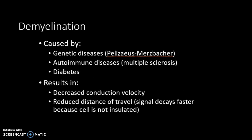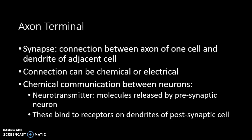Demyelination can be caused by genetic diseases, autoimmune diseases like multiple sclerosis, or diabetes. This results in lower conduction velocity and reduced signal travel distance — the signal decays faster because it's not insulated and may not reach the postsynaptic membrane. The axon terminal is the synapse, the connection between the axon of one cell and the dendrite of the adjacent cell, which can be electrical or chemical.